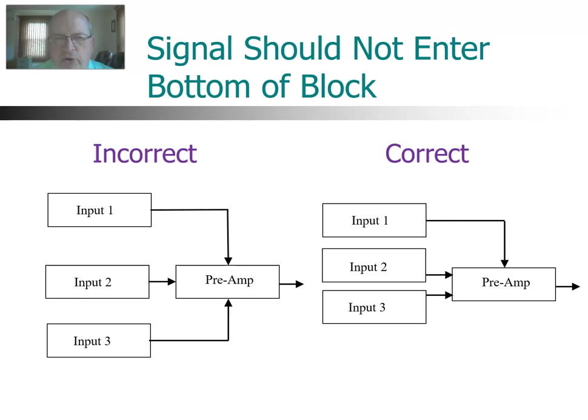Another thing I see students do quite often is they're tempted to get good symmetry by having one of the inputs a bit lower and entering the preamp on the bottom. Remember, the signal cannot enter the bottom of a block. It is not acceptable to enter the bottom of a block. All the signal flow lines should be entering the preamp on either the left-hand side or the top. And that's what we have on the right-hand diagram. That is correct. We have two of the signal lines entering the preamp on the left side and one entering on the top. And we've eliminated that signal line coming in the bottom. That's not acceptable.